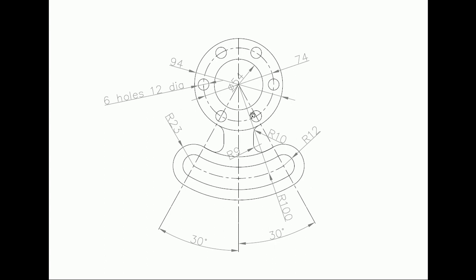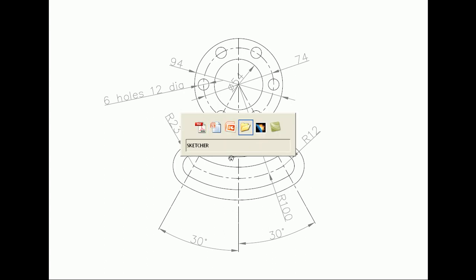Down here we have one more circle — this is a radius of 100. We have a 12-radius inner circle and outer circle, and about a 23-radius outer and inner circle. Here we completely trim the circles at an angle of 30 degrees. After that we are drawing two lines, making offset lines on two sides at a distance of 36. So these are the steps we are going to do in CATIA.